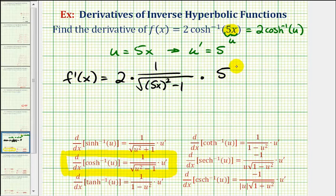So again, notice how we've applied the chain rule here, where this is the derivative of the outer function evaluated at the inner function, and this five is the derivative of the inner function.